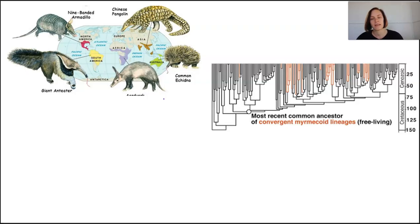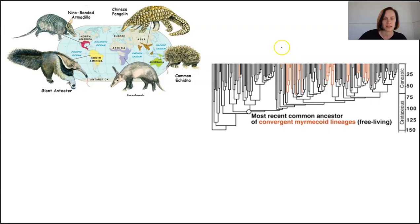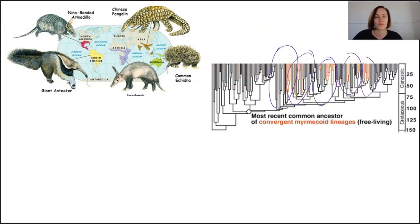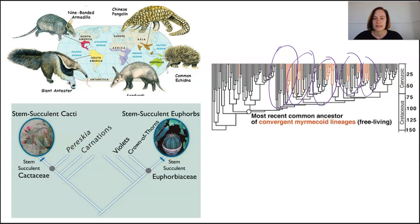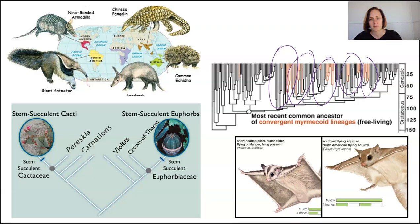Other examples of convergent evolution include the ability to eat ants — echidnas, numbats, and pangolins all have similar nasal or mouth structures to help them eat due to their similar diet. Desert plants have similar leaf structures to avoid losing water in dry, hot conditions even though they don't share the same ancestor. Flying mammals like the sugar glider and flying squirrel have similar wing-arm structures despite not being closely related.